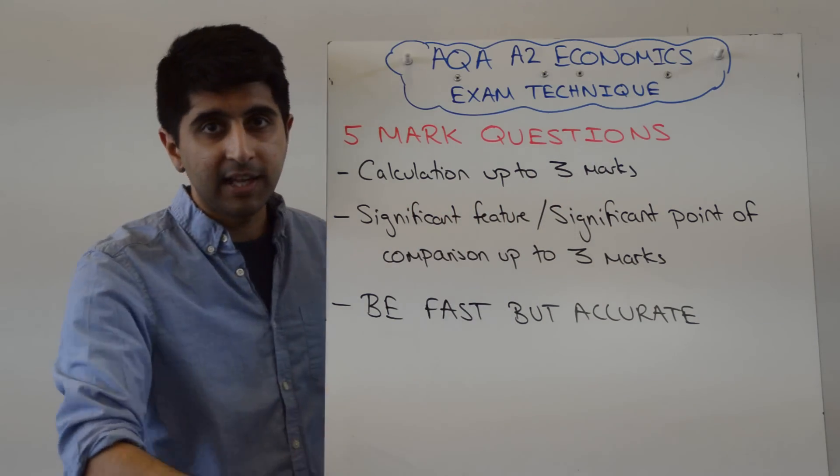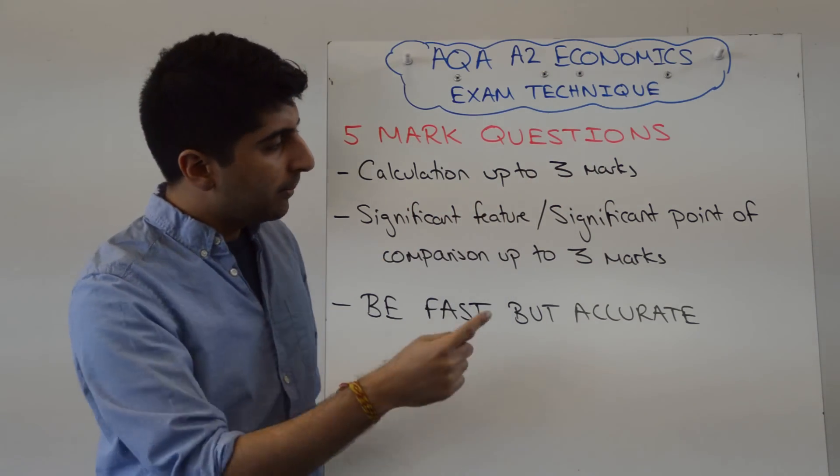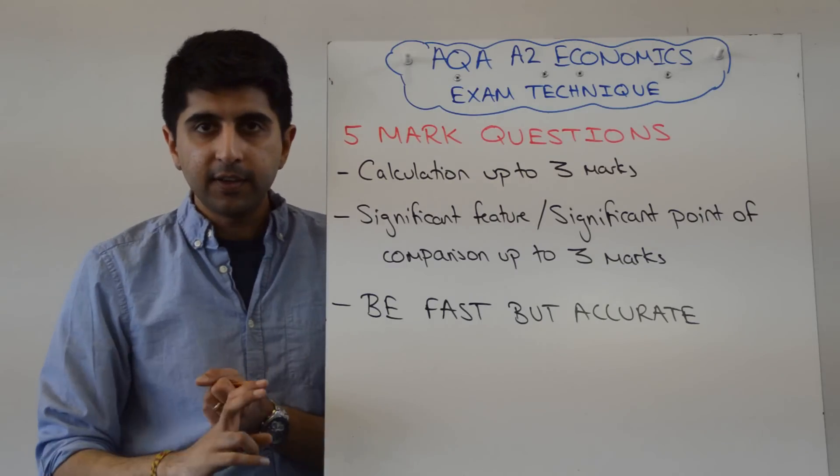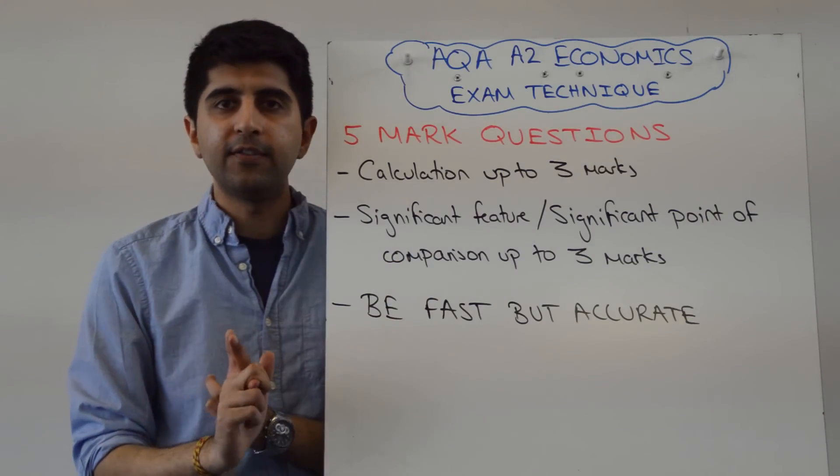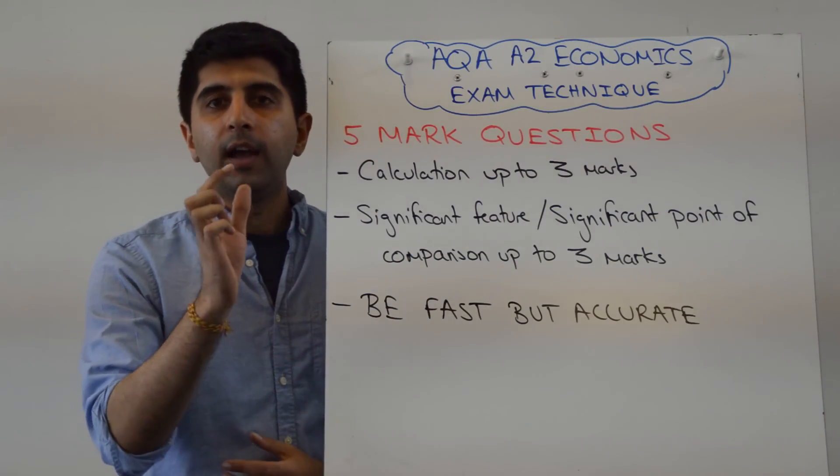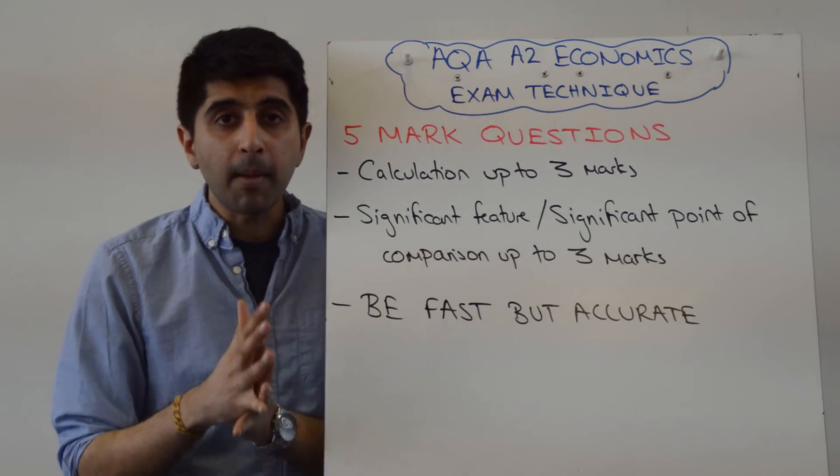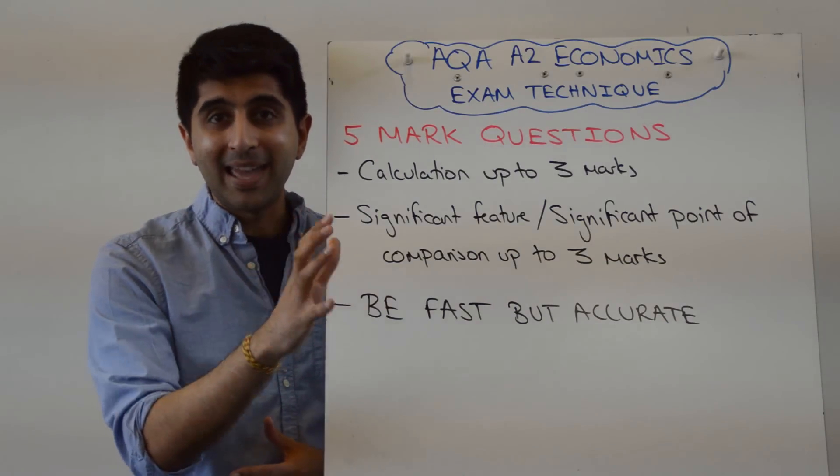Up to 3 marks. If you do that perfectly, 3 marks. The other marks come from the significant feature of the data or significant points of comparison given a data set. You should remember how to do that from AS level.